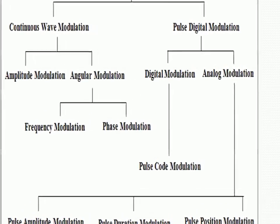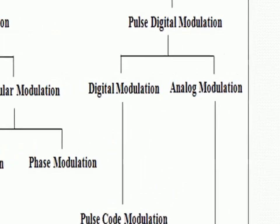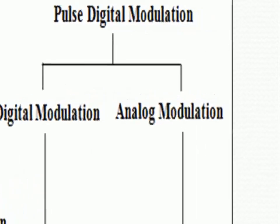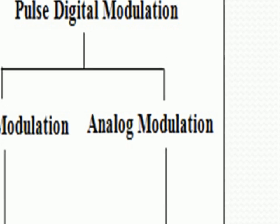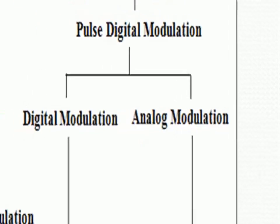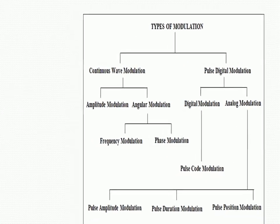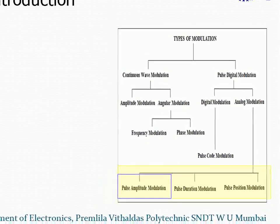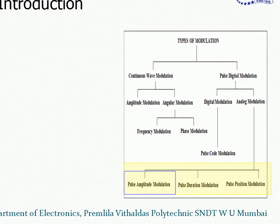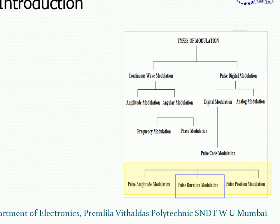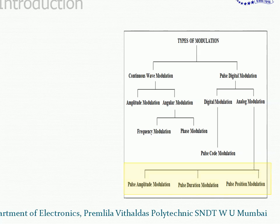There are two sub-categories: digital modulation and analog modulation. When the carrier is digital pulses, the information could be either analog or digital. If the information is analog, it will be analog modulation; if it is digital, it will be digital modulation — also called pulse code modulation. For analog modulation there are three types: pulse amplitude modulation, where amplitude is varied; pulse duration modulation, where the duration of the pulse is varied; and pulse position modulation, where the position of the pulse is varied while time period and frequency remain constant.